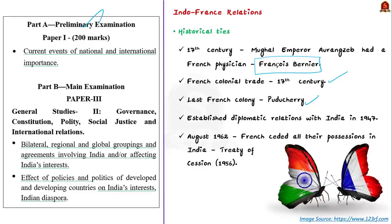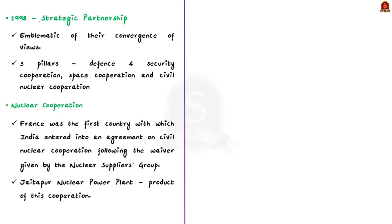After India's independence, France was one of the first countries to establish diplomatic relations with India. But in August 1962 only, France ceded all their positions in India to the Indian government, as per the Treaty of Cession signed in 1956. Then in 1998, the two countries entered into a strategic partnership, which represents their convergence of views.